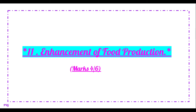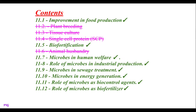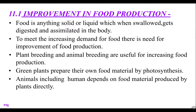This chapter has compulsory 4 marks and with option 6 marks. The contents 11.2, 11.3, 11.4 and 11.6 are the deleted syllabus for this year only due to COVID-19. So today we study 11.1, that is improvement in food production, 11.5 that is biofortification, and 11.7 microbes in human welfare. See one by one — the first point, improvement in food production.